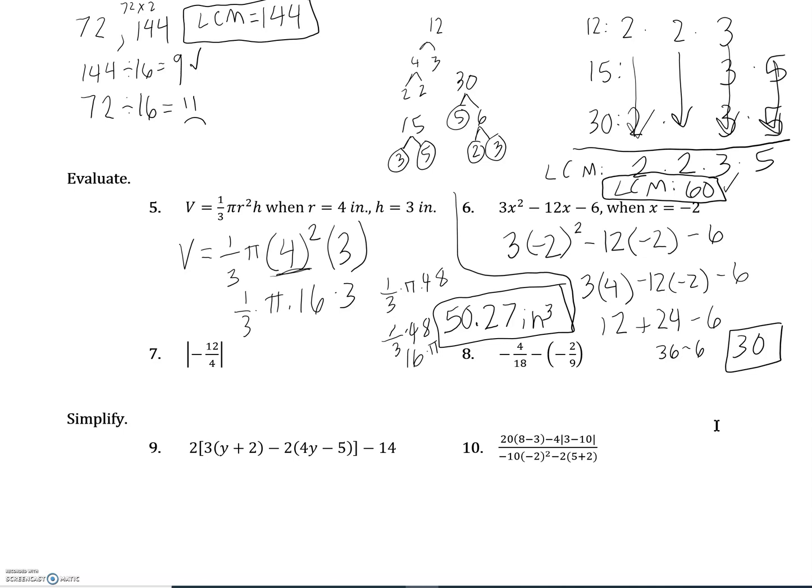Number seven and eight, we got some fractions we need to simplify. And we're going to remember way back when from chapter R that this symbol on either side here is absolute value, which means whatever answer we get when we simplify that fraction, our final answer will become positive because it's telling us how far away that number is from zero. So inside my absolute value bars, I have negative 12 over 4, that simplifies to be negative 3, which becomes now positive 3 because of the absolute value sign.